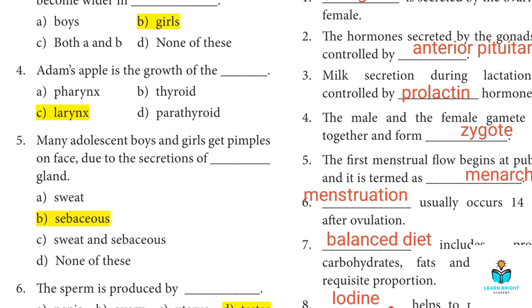Fifth question: Many adolescent boys and girls get pimples on their face due to the secretion of the sebaceous gland. Answer B: Sebaceous glands.